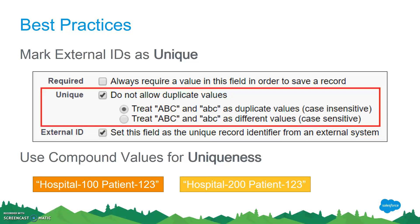As we're talking about uniqueness, sometimes that external ID value from the external system might not be unique enough once you get it into Salesforce. For example, I worked with a client importing patient data from multiple hospital systems. Within each hospital system, the patient identifiers were unique, but it was probable that any two hospital systems might be assigning the same ID to different people. So when we brought that data into the client's Salesforce, we had collisions on those patient IDs. To get around that, we used a compound value — we concatenated an identifier for the hospital system plus the patient ID, making it globally unique within the Salesforce org.